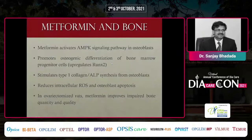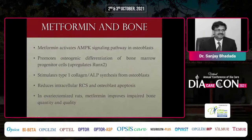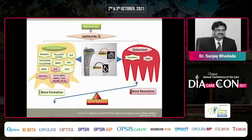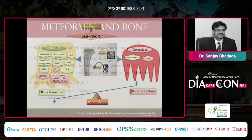Metformin, the number one drug in type 2 diabetes management, acts via the AMP kinase signaling pathway to stimulate osteoblasts and osteoblast precursor cells. This is upregulated through the cytokine RUNX2. Metformin also stimulates type 1 collagen and ALP synthesis from osteoblasts, and it reduces intracellular reactive oxygen species, thereby reducing osteoblast apoptosis. Through these multiple mechanisms, metformin seems to be helpful for bone health — shifting the balance in favor of bone formation over bone resorption.